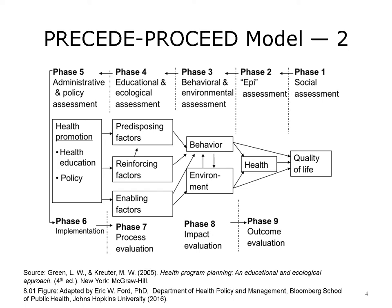Phase 3 is what we call the behavioral and environmental assessment. By behavioral, we're often talking about our constituents and the processes they go through in their day-to-day lives that are either facilitating better health or causing negative outcomes. In the bike example, we may want to know if the target population owns a bike or even knows how to ride. One common intervention these days is to put community bikes in place to promote increased ridership — will that be needed in your community?